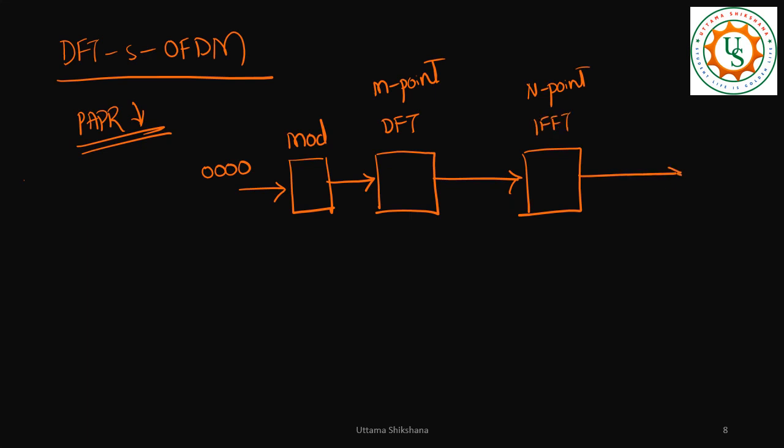Usually in DFT-SOFDM, M will be less than N. For simplicity, what we will do is take 4-point for this and 2-point for this.